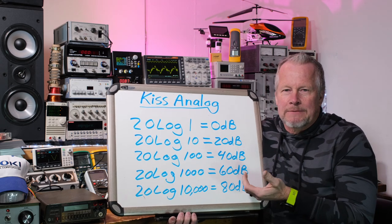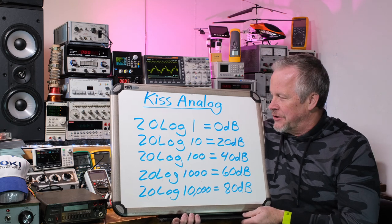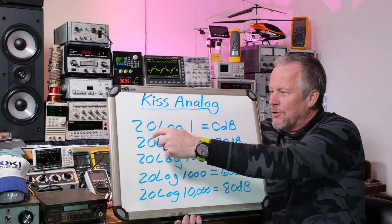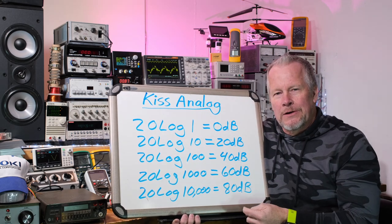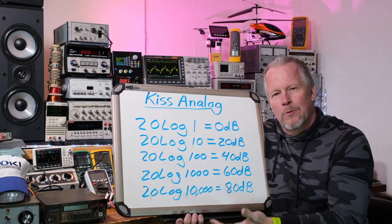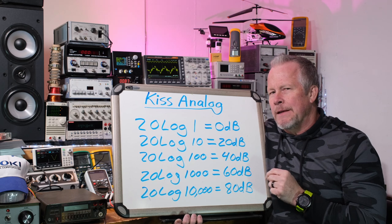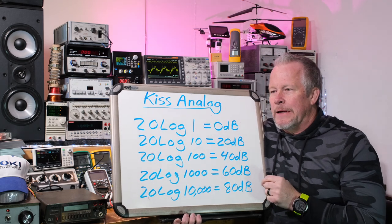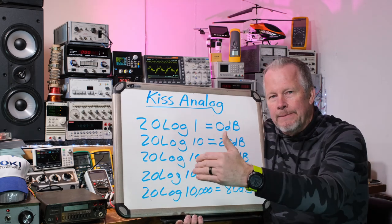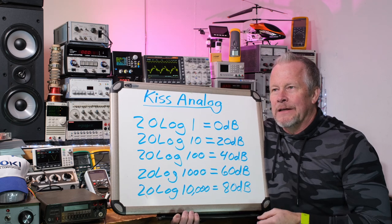Log is an important tool to help us compress things so we can visualize them. And it's the way our senses work anyway — they work in a logarithmic fashion. So now let me explain where the 20 comes from for volts and current, and why we use 10 for watts, and also that important 3 dB factor when plotting graphs.